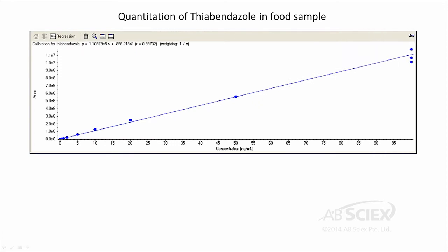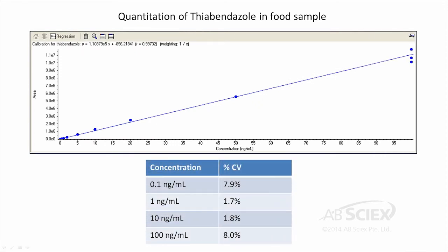TRIPLETOF is a unique mass spec system with quantitative performance similar to what you would get with your triple-quad mass spec system. The TRIPLETOF Accurate Mass System delivers four orders of linear dynamic range for accurate quantitation of residues and contaminants with excellent precision across this range.